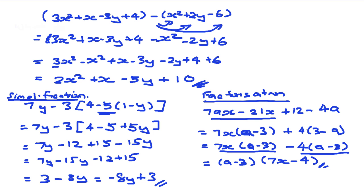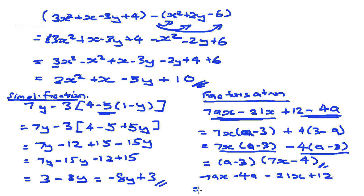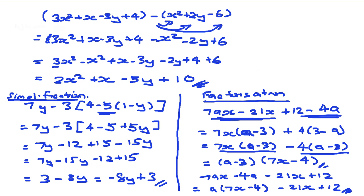Some people may ask why we grouped those particular terms together. For example, grouping 7ax and minus 4a because they share the variable a would give a times 7x minus 4, but the remaining terms minus 21x plus 12 don't simplify as nicely. The trick is that you need practice to develop a sense for which terms to group together for effective factorization. But this is essentially the process of factorization and simplification, and you can apply addition and subtraction of algebraic expressions.